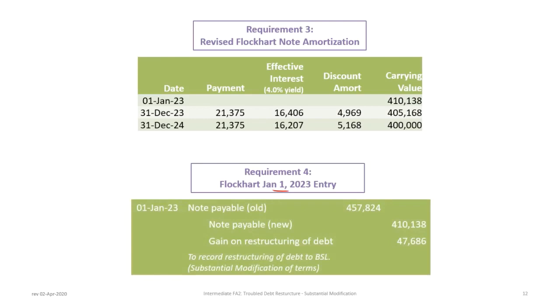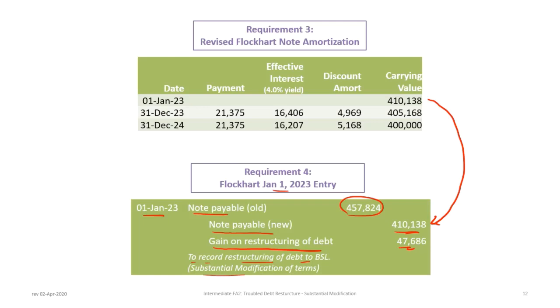Finally, we record the journal entry at January 1st, 2023. We debit the old note for $457,824, record a new note at $410,138 based on the revised present value and market rate, resulting in a gain on restructuring of debt of $47,686. This records the restructuring of the debt to BSL under substantial modification of terms.